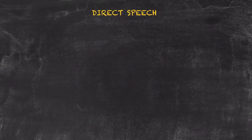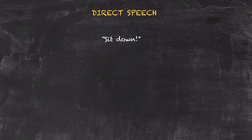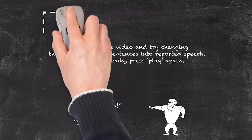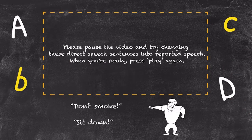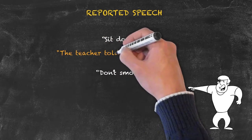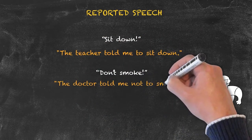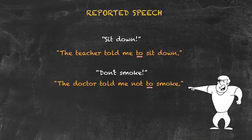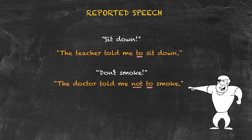We have another type of statement that can be made and reported — commands or imperatives. A teacher might tell a student: 'Sit down.' And somebody might say: 'Don't smoke.' These are special instances. The reported speech for these commands would be: 'The teacher told me to sit down' and 'The doctor told me not to smoke.' We've added the infinitive form — 'to sit' rather than just 'sit,' and 'to smoke' rather than just 'smoke.' In the negative form, 'do not,' we drop 'do' and keep 'not,' resulting in 'the doctor told me not to smoke.' We can also change 'told' into 'warned' or 'ordered.'